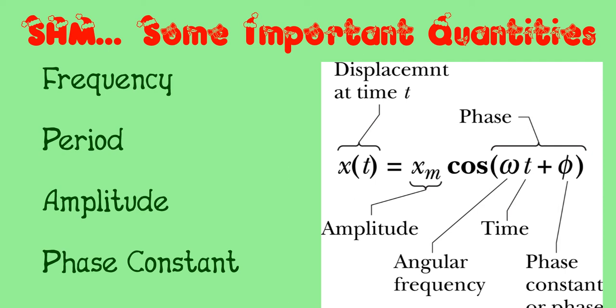Some of the quantities that are important when something's in simple harmonic motion is the object's frequency, or how frequently it repeats its motion in a given time period. Quite often, we measure how many motions occur in one second. When that's the case, frequency is measured in hertz, or one over seconds.